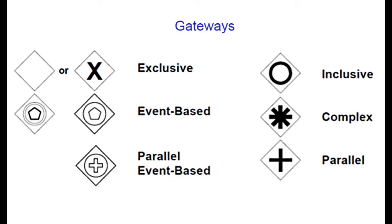A gateway is represented with a diamond shape and determines forking and merging of paths, depending on the condition expressed. Note that there is no work to be done by the gateway. For instance, if you need to check that all material is in stock before you start assembling your product, this activity shall be done before the gateway. The gateway will just check that the condition is met without actually doing any work. A gateway can be exclusive, used to create alternative flows in the process — because only one of the paths can be taken, it is called exclusive.